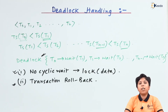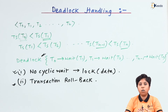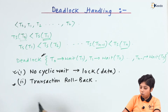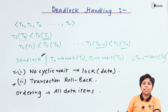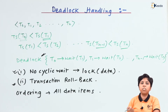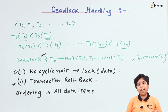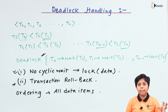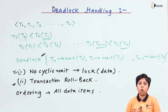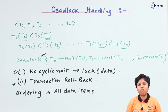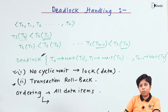For no cyclic wait, there are two types of ordering. The first is ordering of all data items — every data item we consider must arrive in a defined order so we will not enter a deadlock. If transaction Ti is performing a read on item Q, we cannot have Q acquire an exclusive lock held by another transaction. We must define an order such that we have all data items ordered.